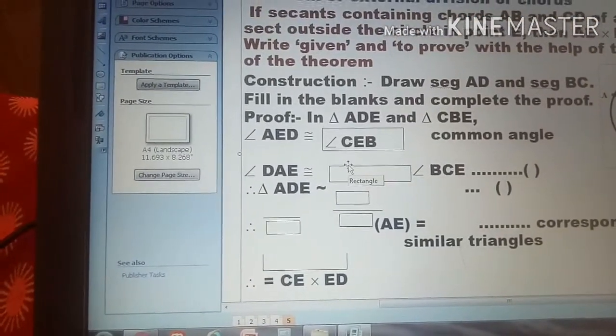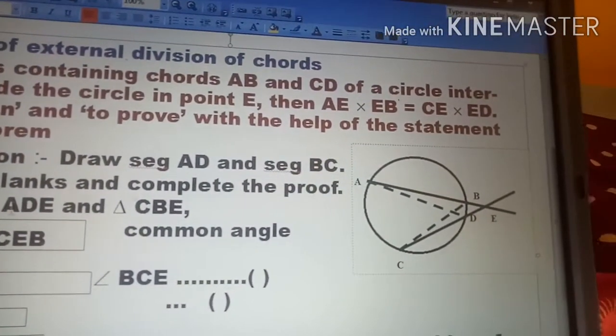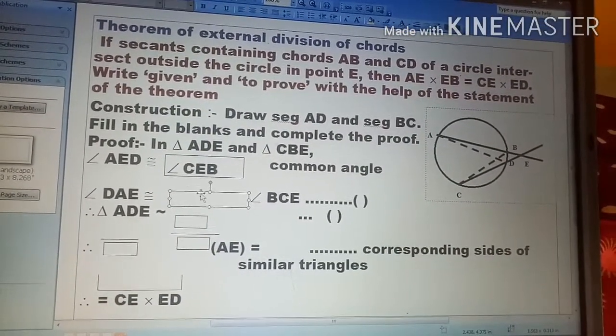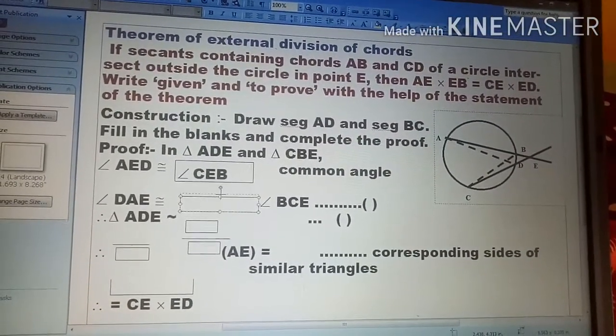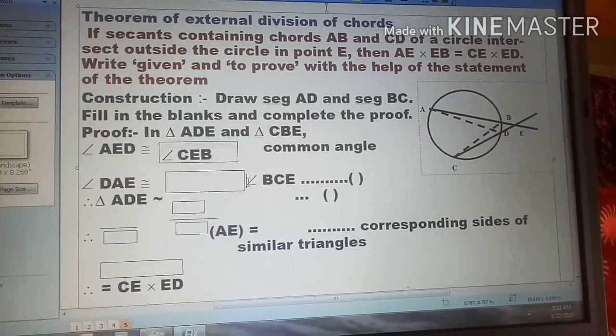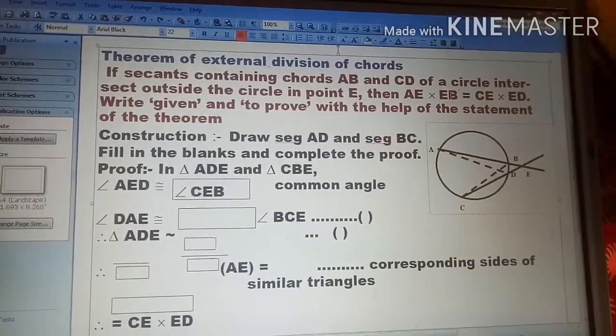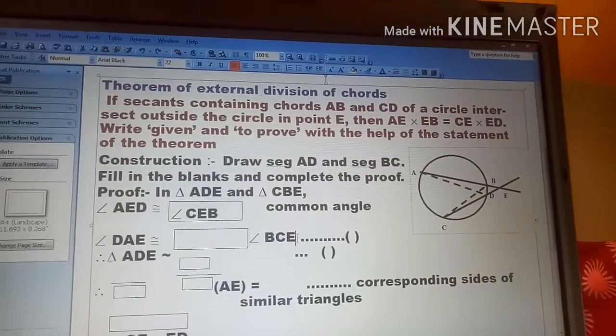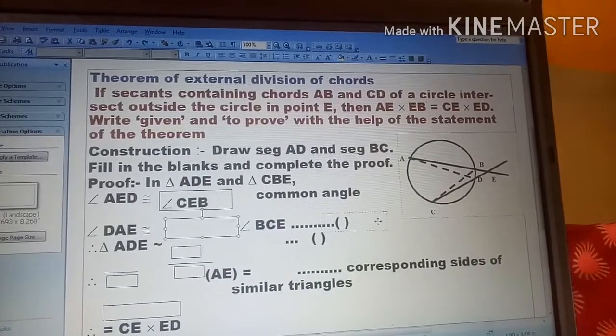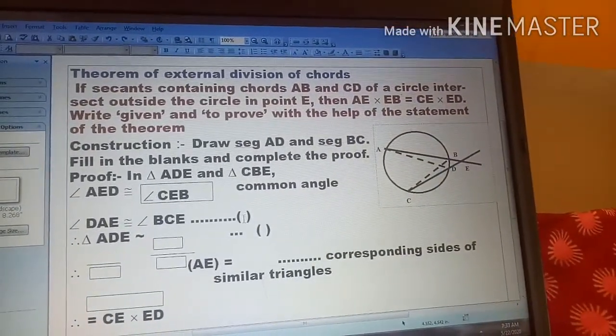After that we have given angle DAE. Angle DAE, this angle is formed by the arc BD, inscribed angle. So its same angle is there, BCE. So we have to write here the reason.